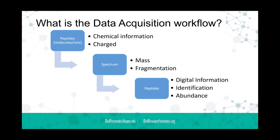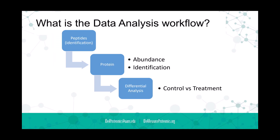We then have digital information about the peptides — identity and abundance — and we move to the data analysis workflow. We do a database search, taking maybe 20,000 peptides observed in a one-hour run, corresponding to perhaps three to five thousand identified proteins. After that comes differential analysis, the bioinformatics part, where we compare control samples versus treatment: which proteins appeared in each, how much was present, and we apply statistics to determine significance.